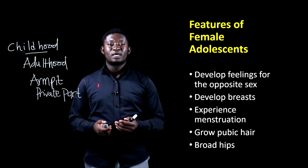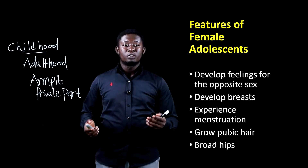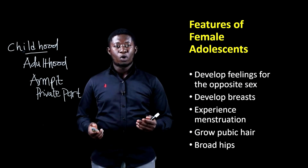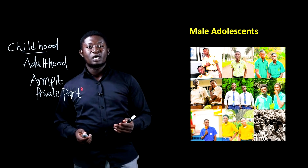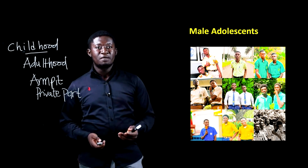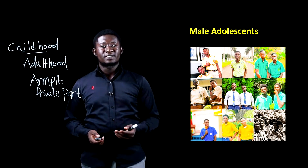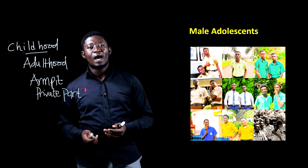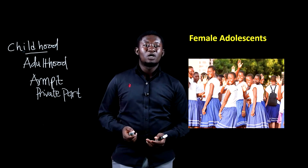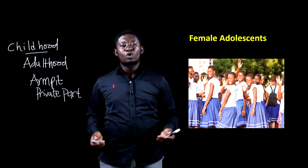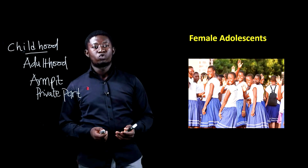And finally, females also develop broad hips. This is an image of some male adolescents who are in groups. This is also an image of some female adolescents who are in groups.